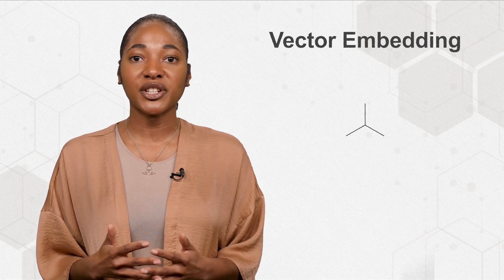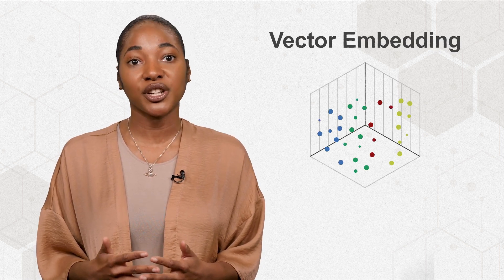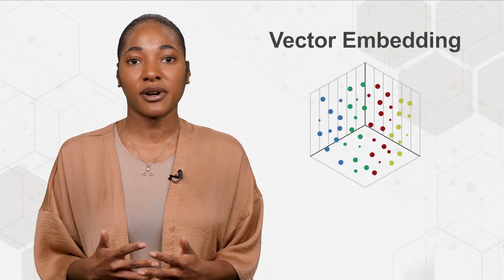While we say vectors are numbers that represent data, they're actually complex, mathematical representations. In order to search vectors, they first have to be arranged in what's called a vector embedding, a multidimensional view of data generated by machine learning techniques such as neural networks.